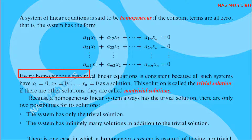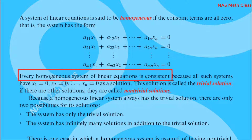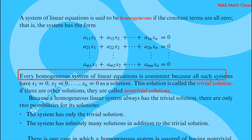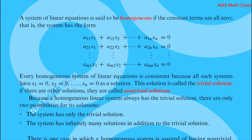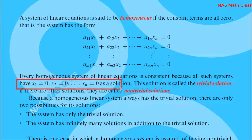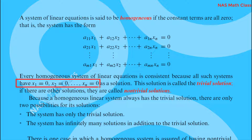Every homogeneous system of linear equations is consistent because all such systems have x equal to 0, x equal to 0, and x equal to 0 as a solution.